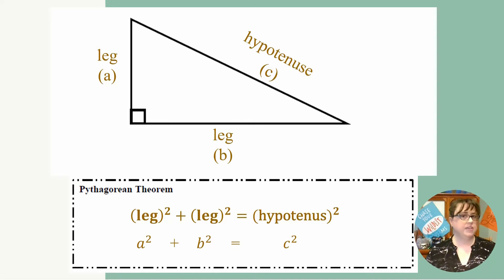It's a whole lot easier to say, but we need to understand that it's the two legs squared and then added together, equals the hypotenuse being squared.